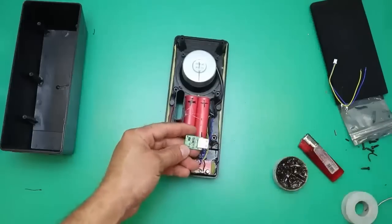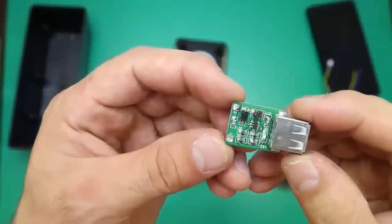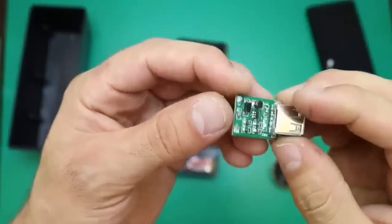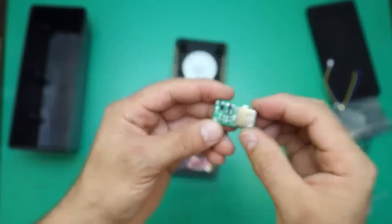We can transform it into power bank using the USB charger step up module. The module you can find in the description of the video. This module can output 5 volt voltage for your mobile phone, very simple and convenient.